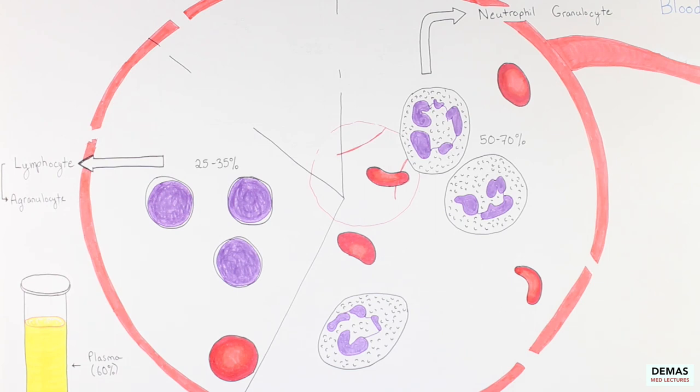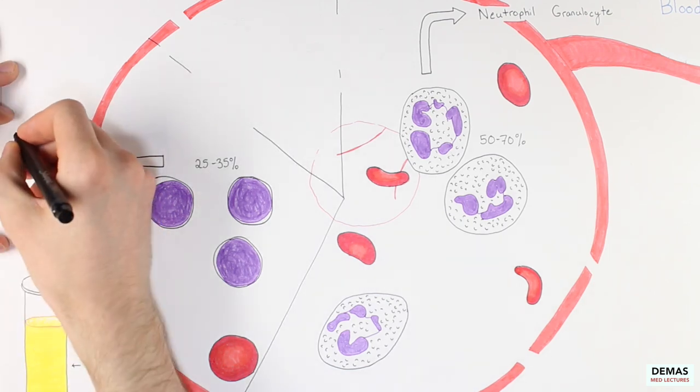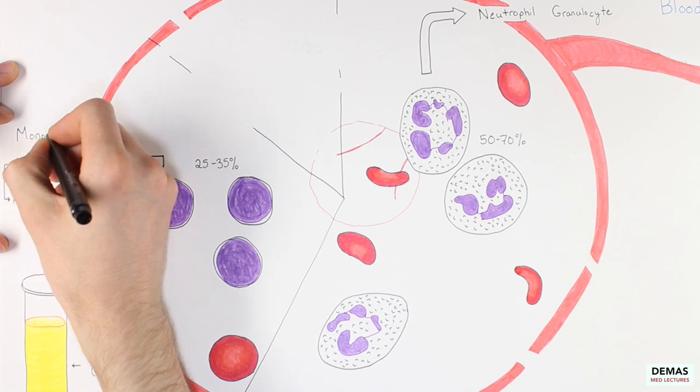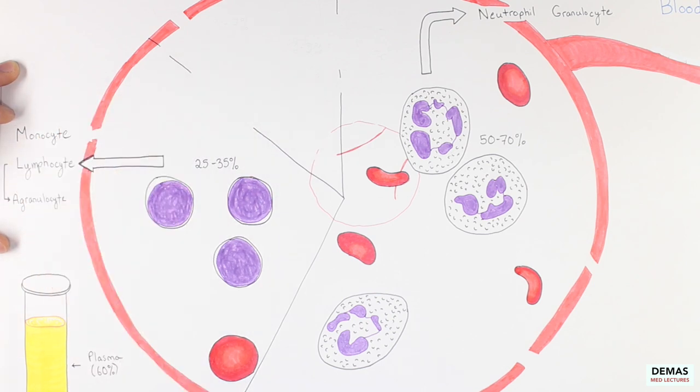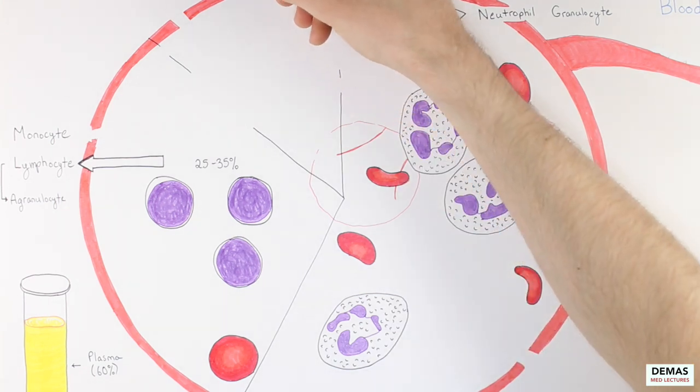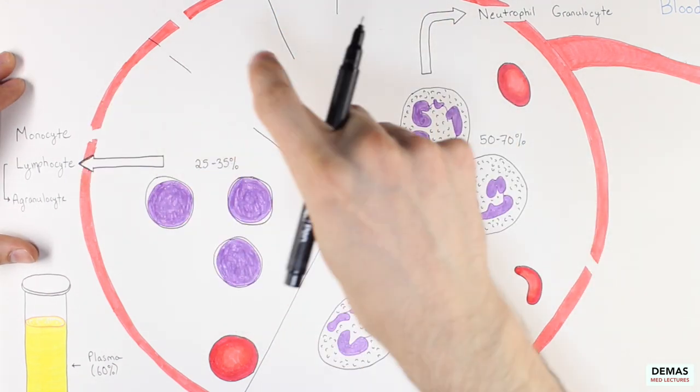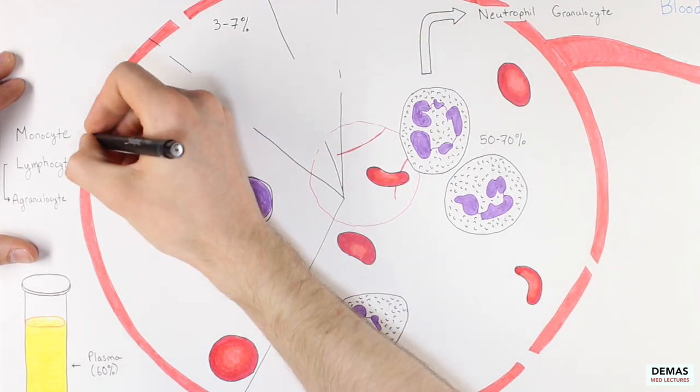The next category of blood cells we are going to cover is monocytes. Monocytes are immature blood cells that ultimately become mature macrophages once they leave the blood and enter the tissues, and we will discuss this process more in a little bit. Monocytes are the third most abundant white blood cell type making up anywhere between three to seven percent of the white blood cell content.